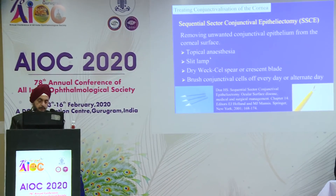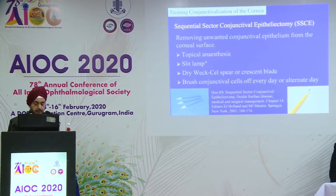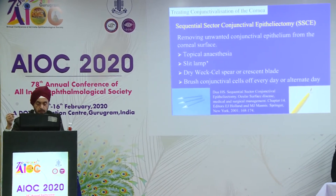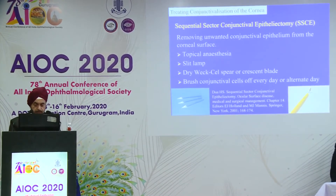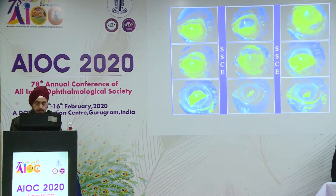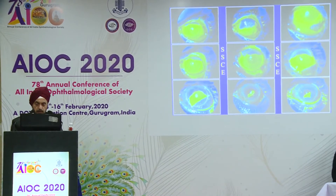Under topical anesthesia at the slit lamp, you can use a crescent blade, a dry swab, or anything that will help to remove the cells. Here's an example: you can see this epithelium is healing from the limbus, it's coming in, but this conjunctiva is growing in here.